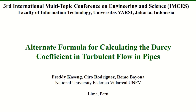Hello. In this paper we will talk about the Alternate Formula for Calculating the Darcy Coefficient in Turbulent Flow in Pipes. The proposal of this research was to determine an alternative formula for calculating the Darcy Coefficient in Turbulent Flow in Pipes. The proposed Alternate Formula is an explicit formula that should be used to replace the Colebrook-White formula, since it has higher precision than the explicit formulas currently in use.